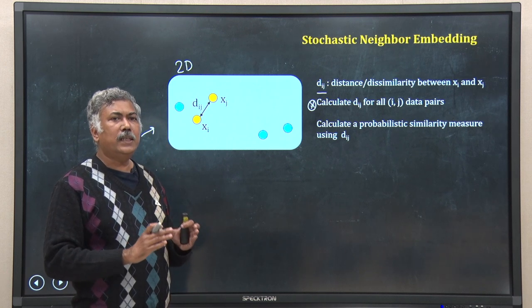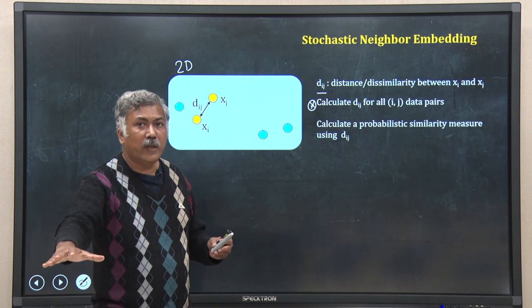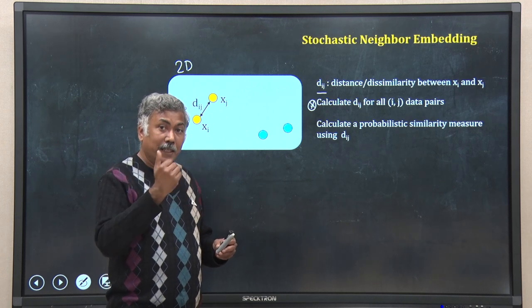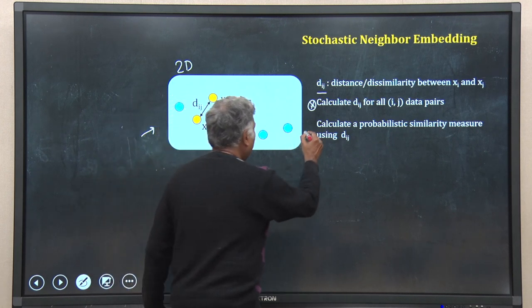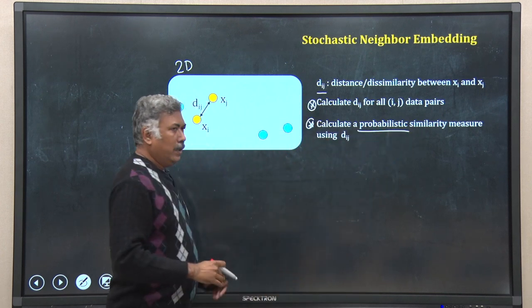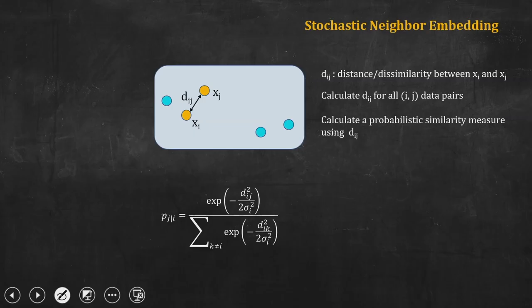The interesting thing is that in SNE, I will not use the distance or dissimilarity data in higher dimension directly to embed in lower dimension. Instead, I will use a probabilistic measure calculated from this distance measure. I will calculate a probabilistic similarity from the d_ij data — specifically a conditional probability. The conditional probability p_j given i is given by a specific formula.